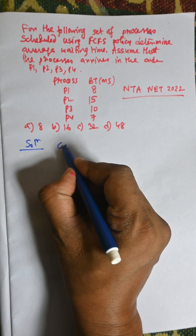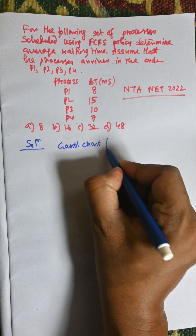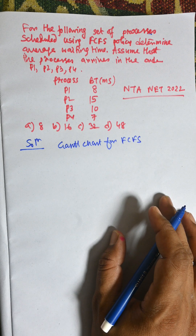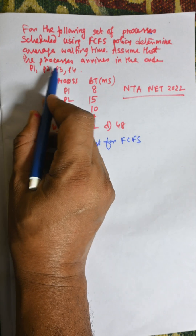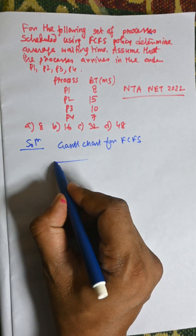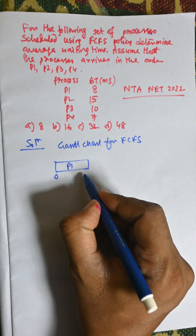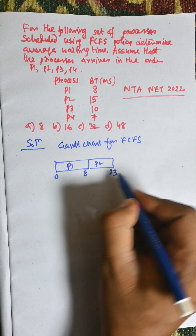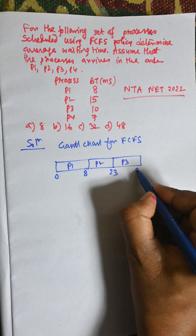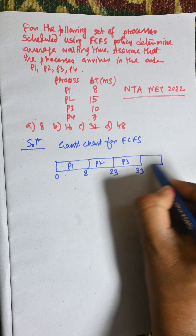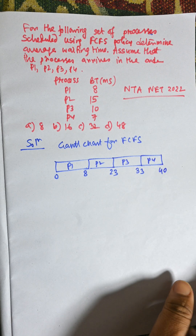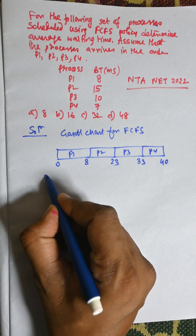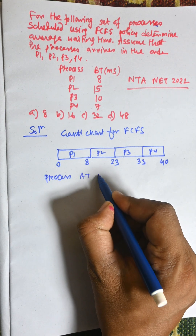Let's solve the problem. First of all, we need to draw the Gantt chart. For FCFS, there are no arrival times, so we consider the sequence P1, P2, P3, P4. P1 will execute for its burst time, then P2 executes at 20 plus 15, then P3 at 10, reaching 33, and finally P4 for 7, reaching 40.